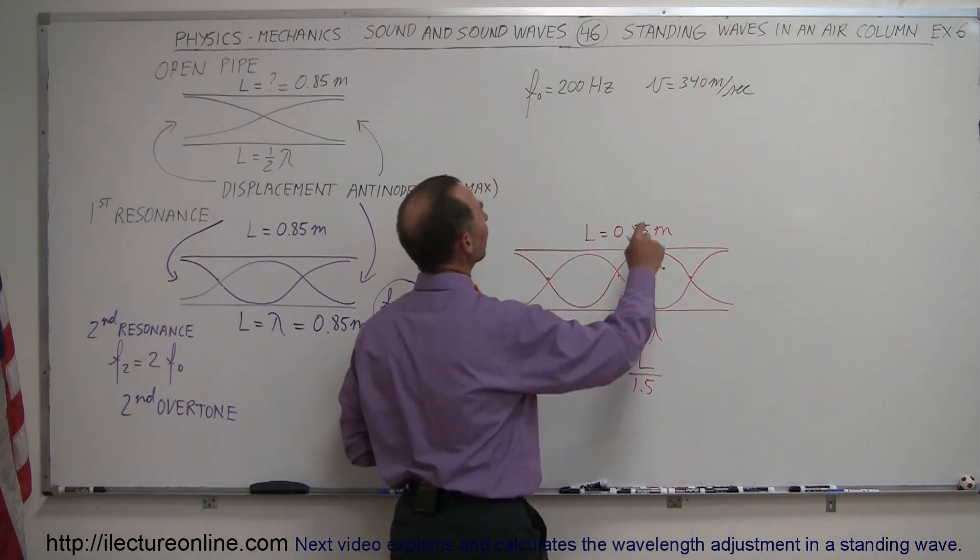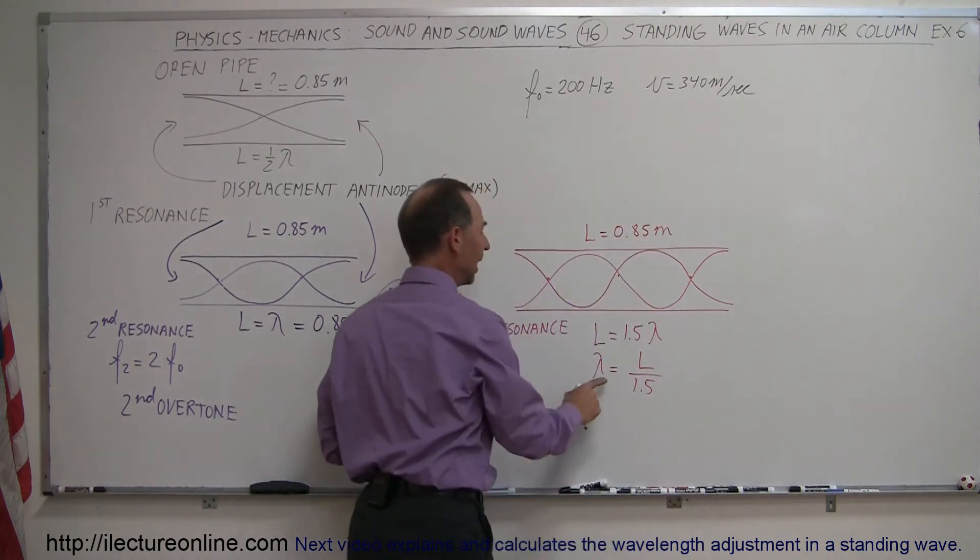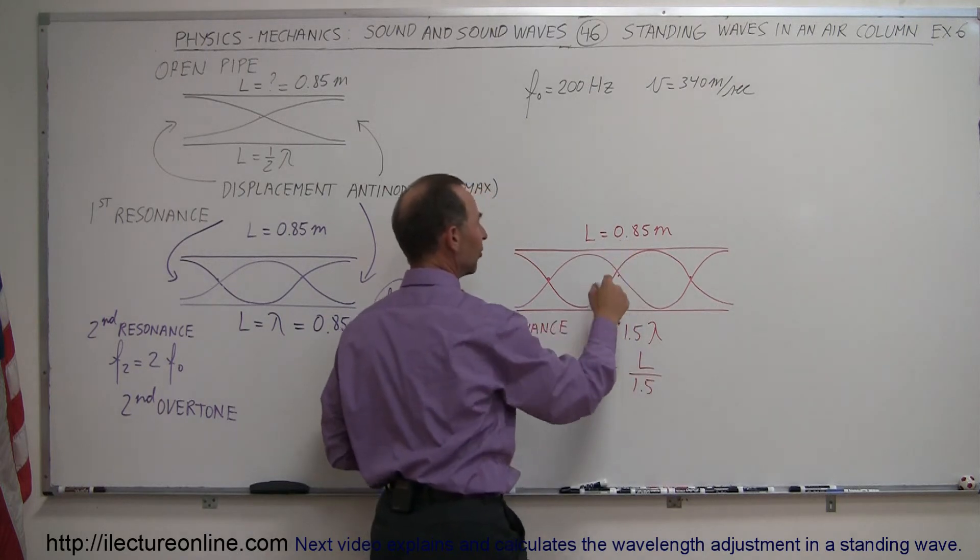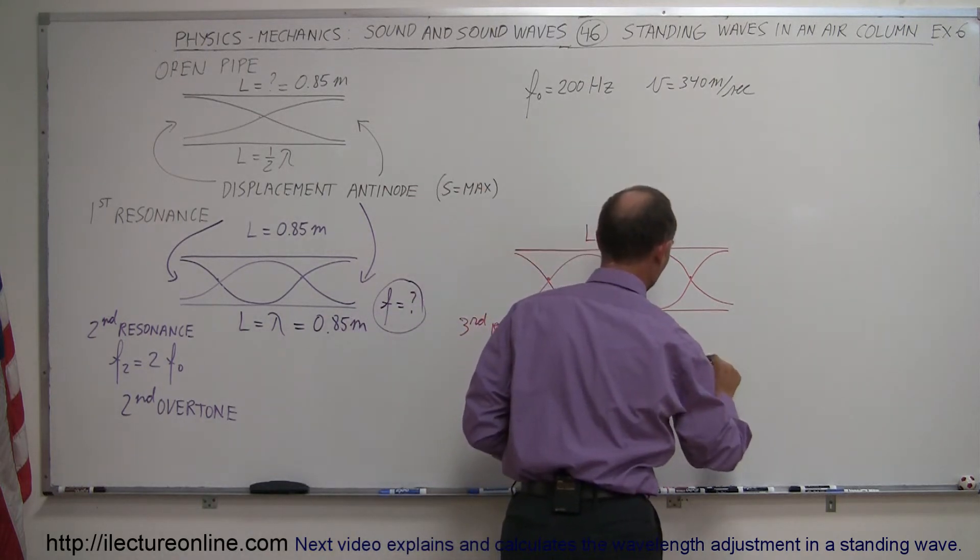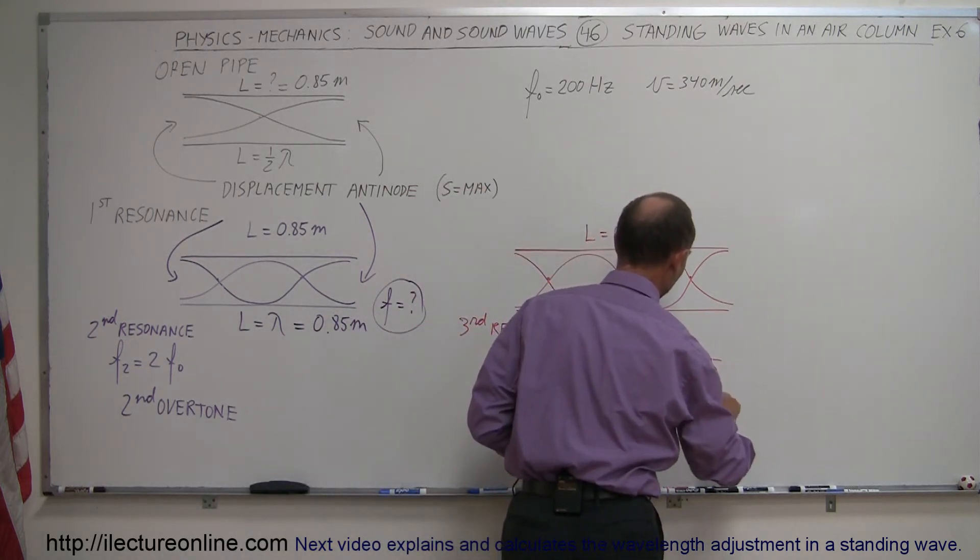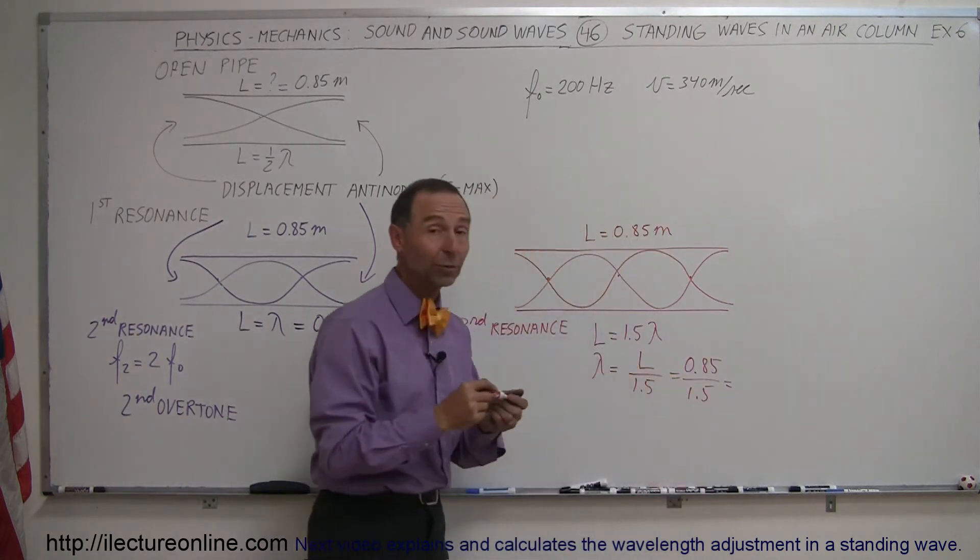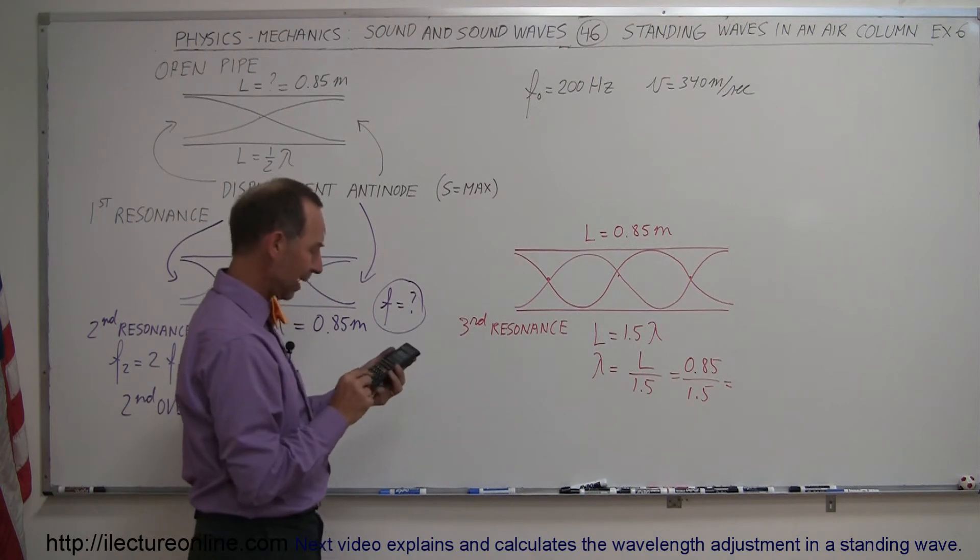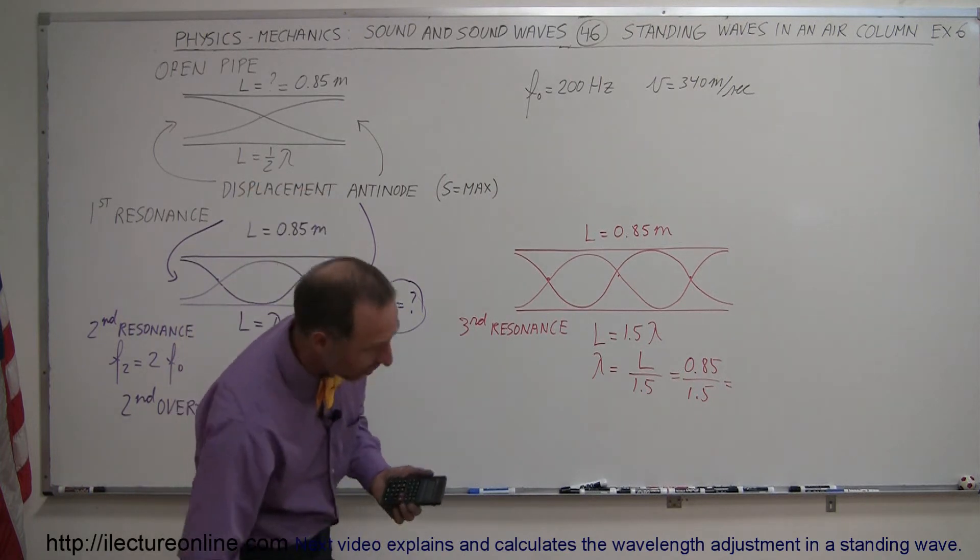Knowing that the velocity is equal to 340 meters per second, and now we know that the wavelength is equal to L over 1.5, and L is 0.85. 0.85 divided by 1.5 gives us the new wavelength required of that sound wave that gives us a resonance frequency like that. So 0.85 divided by 1.5 equals 0.567.